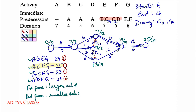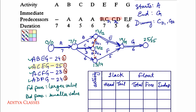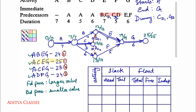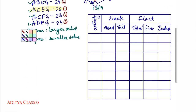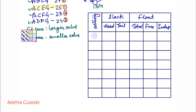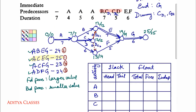Now we prepare the table for finding out slacks and floats. We have activities A, B, C, D, E, F and G. Let us put them in the table.